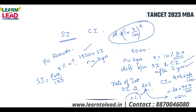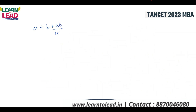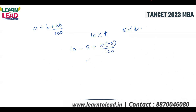The difference between simple interest and compound interest at 10% per annum is 1% of principal. If 1% of principal equals 50, then the difference for two years is 50. Using the formula A plus B plus AB by 100: for a 10% increase followed by a 5% decrease, the net result is 10 minus 5 plus (10 × −5 / 100) = 5 minus 0.5 = 4.5% net change.